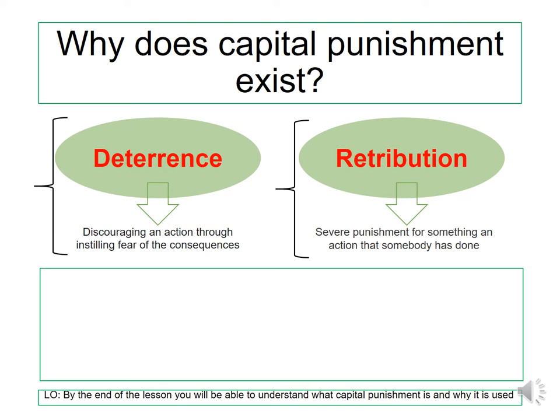The definition of deterrence is discouraging an action through instilling fear of the consequences. For example, if someone does face capital punishment and they do die for committing a crime, that would put off other people from committing that same crime because of the fear of death.